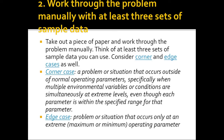The second step is to work through the problem manually with at least three sets of sample data. For example, if you're solving a problem to add two numbers, you think of sample data like five and seven, and you try to do it manually. Think of at least three sets of sample data you can use.